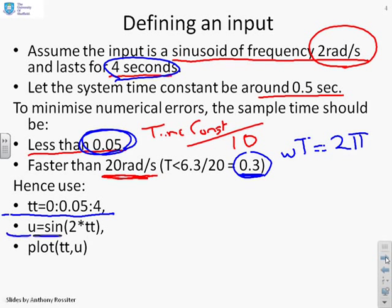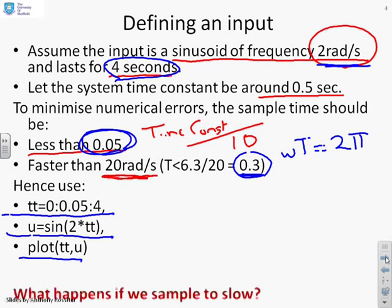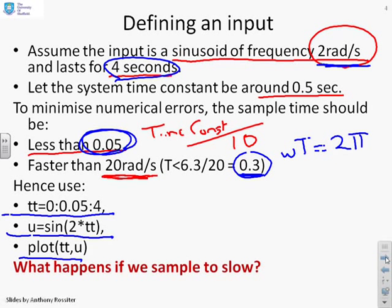Next, I've defined my sine wave. Now, it is u equals sine of 2 times tt. You'll notice the frequency was 2 radians per second, which is where that 2 came from. And then I can plot this to see what it looks like. Now, before we do the plot, a key question. What would happen if we were to sample too slow? So if our spacing was bigger than 0.05? Let's have a look.